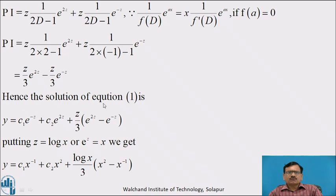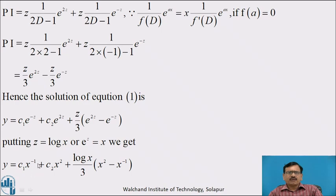Hence the complete solution of the reduced equation is y equal to CF plus PI, that is y equal to c1 e raised to minus z plus c2 e raised to 2z plus z by 3 times (e raised to 2z minus e raised to minus z). To get the solution of the original equation, put z equal to log x or e raised to z equal to x. We get y equal to c1 x raised to minus 1 plus c2 x squared plus log x by 3 times (x squared minus x raised to minus 1), which is the solution of the given non-homogeneous equation.